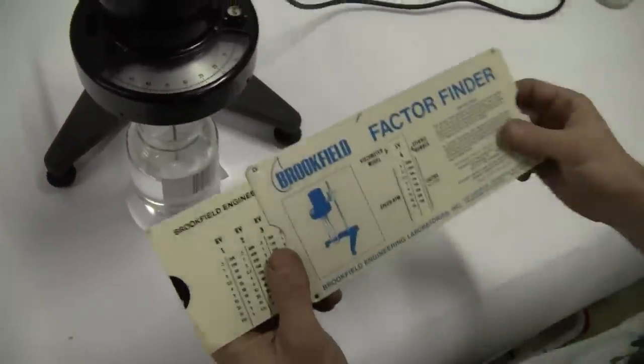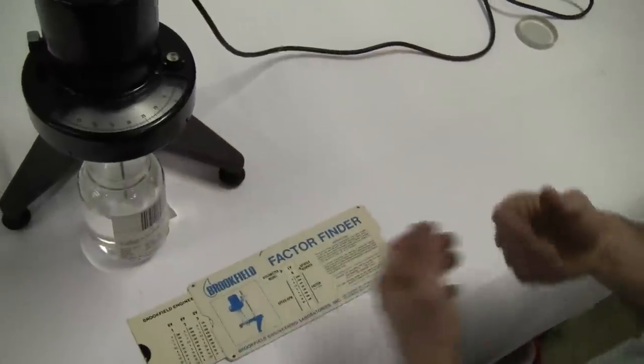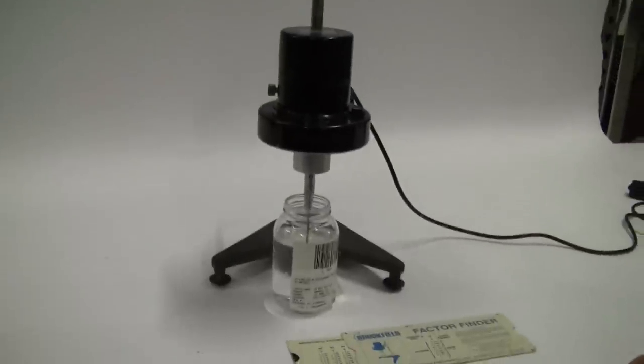We go to our chart here. It's an LV model viscometer. Down to 12 RPMs, our factor is 500. So that gives us 15,500 centipoise. Well within range of what we'd expect.